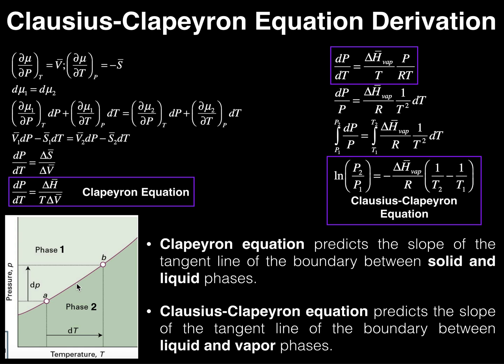When you're at equilibrium, we say the chemical potentials of phase one and phase two are equal. Chemical potential is given by the Greek symbol mu. Chemical potential, or mu, is the free energy divided by the number of moles — G divided by N. So you could think of mu as a molar free energy, similar to molar volume or molar entropy. When two phases are in equilibrium, mu one equals mu two.